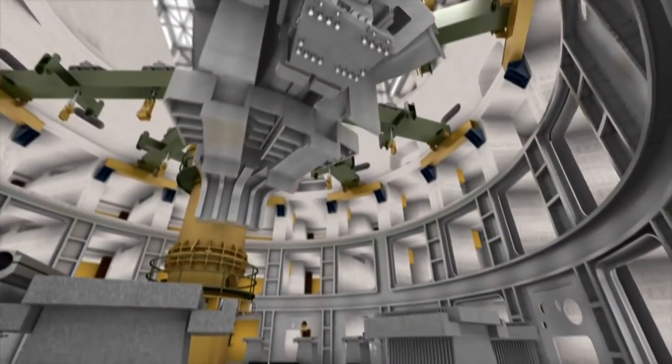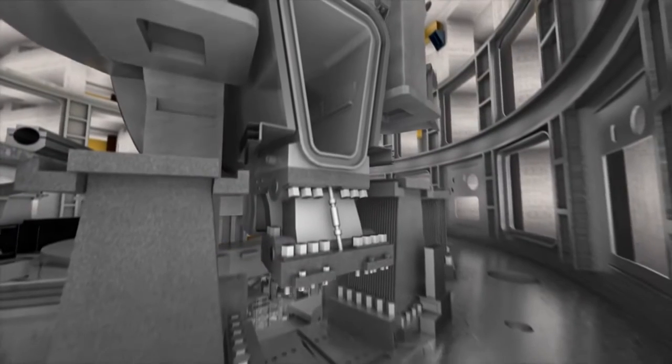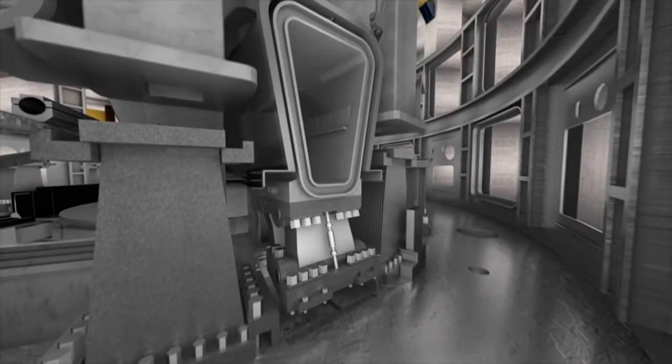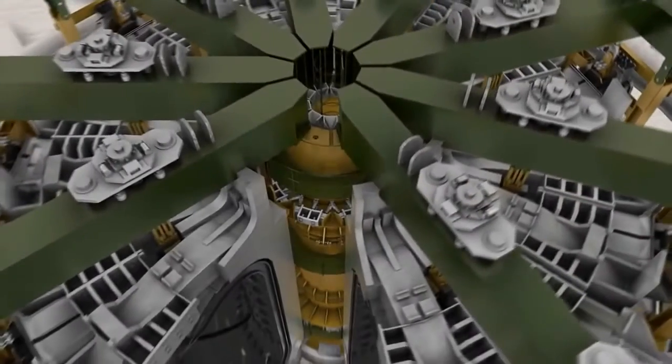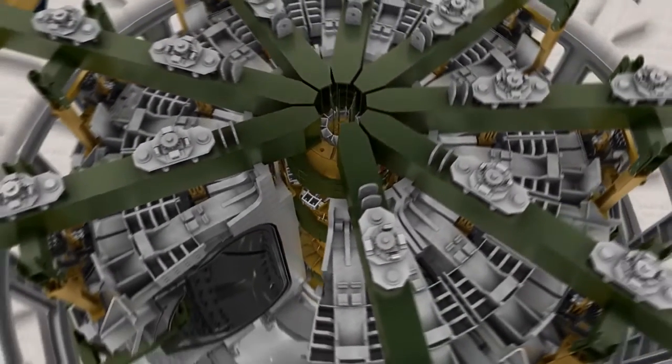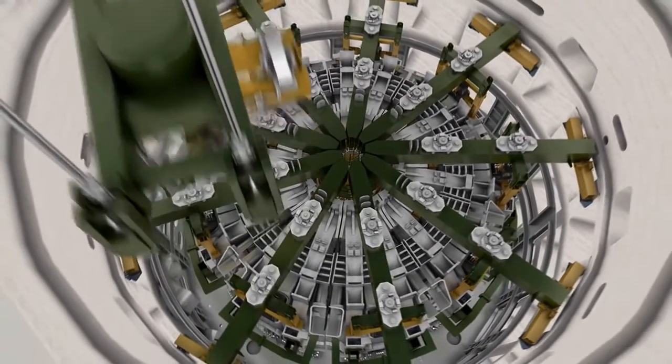The accurate alignment of the tokamak components, particularly of the magnet system and in-vessel components, is essential to the successful operation of the machine. Assembly sequences have been planned with this in mind, and will utilize sophisticated optical metrology techniques at each step of the assembly process.